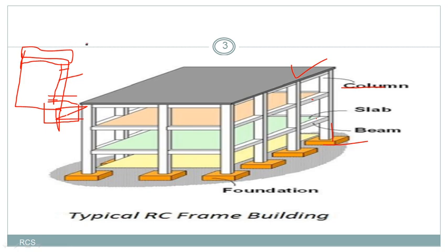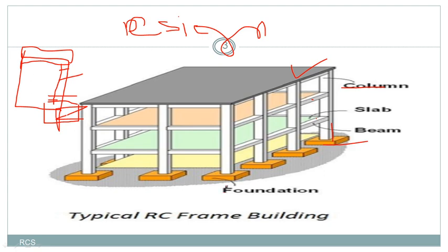What is the basic difference between construction and design? If you observe this figure, how we constructed: we constructed first the foundation, then laid a column, then beam and slab. But how have we designed this member? First we have to design beam and slab members, then column, then foundation.